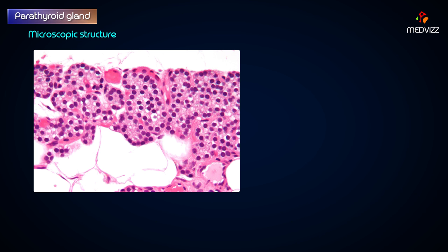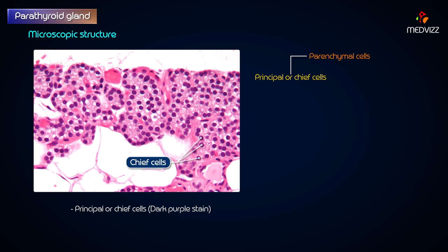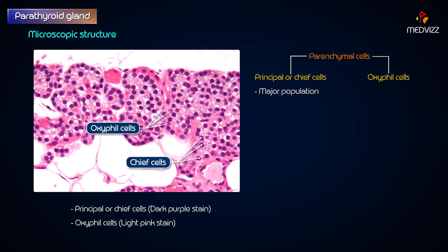Regarding microscopic structure and functions: the parenchymal cells of the gland form irregular anastomosing cords or groups of cells. The parenchymal cells are of two types: principal or chief cells, and oxyphil cells. The chief cells form the major population and secrete parathyroid hormone, called parathormone.